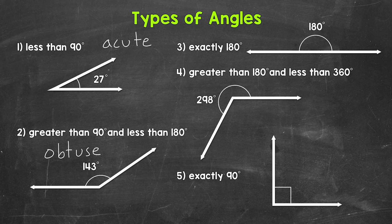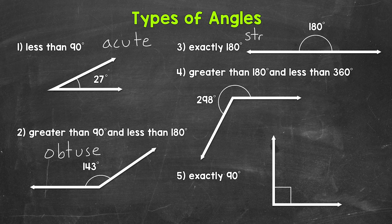Let's move on to number three, where we have an angle that measures exactly 180 degrees. This is called a straight angle.